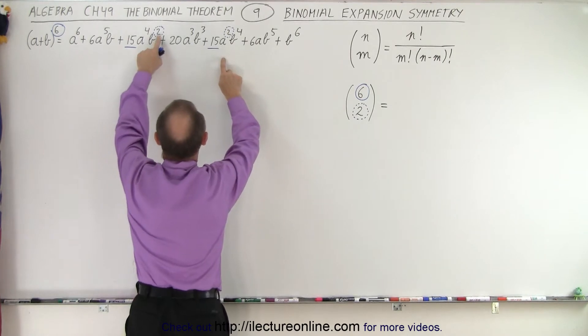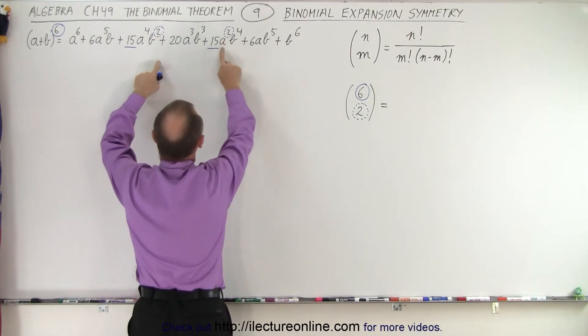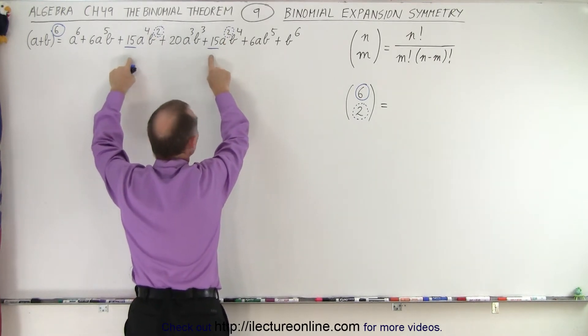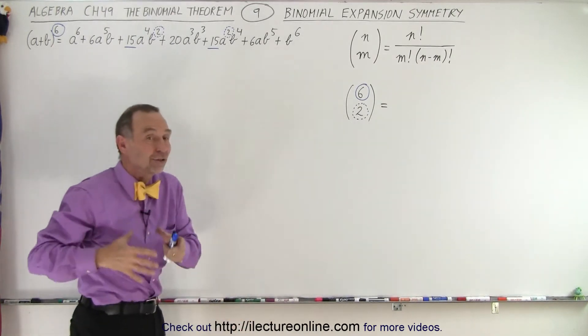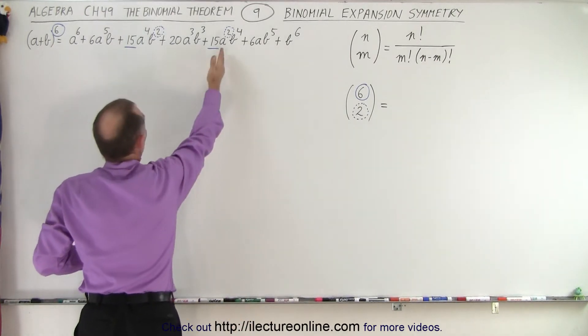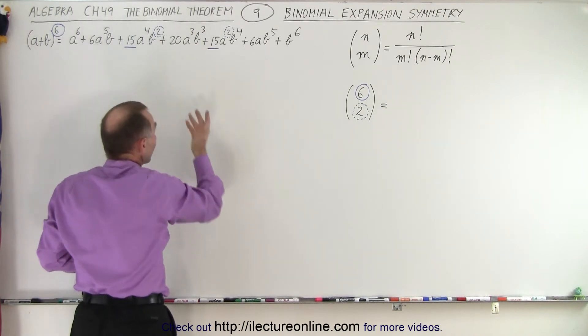Notice that if I use B squared or A squared, the numerical coefficient is identical. So this number at the bottom can actually be the exponent of either the first term or the second term. It doesn't matter.